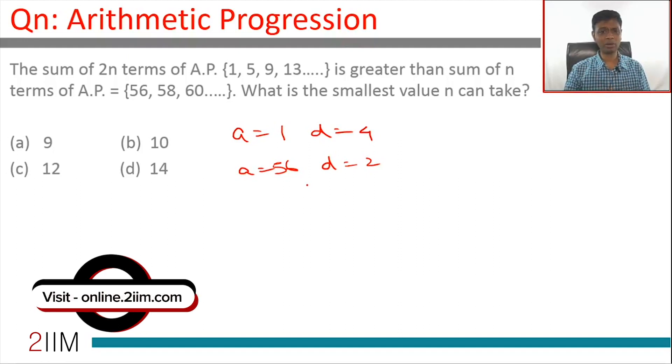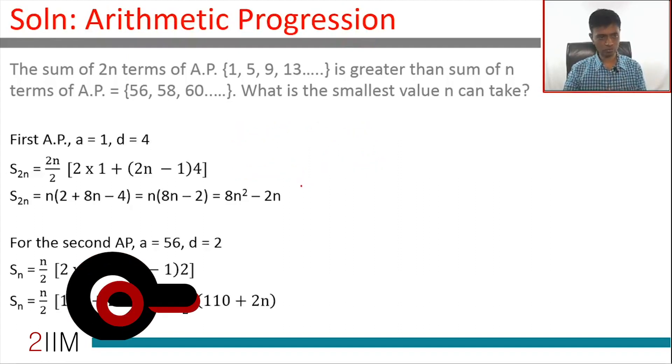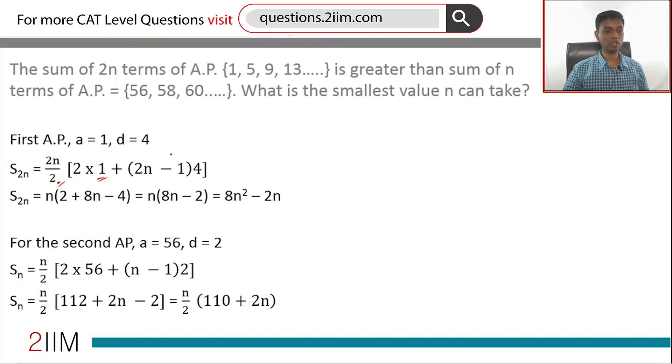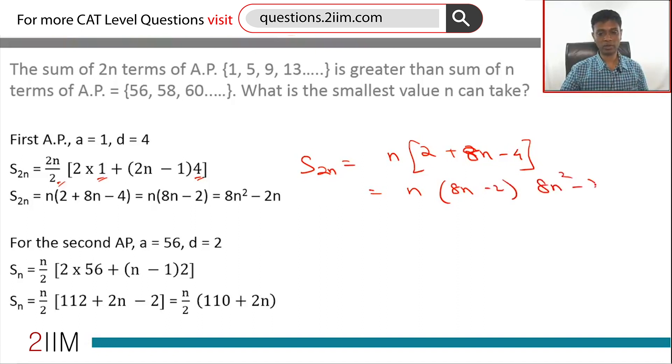I am just going to do this algebraically, plug in the formula, work from there. So, the sum up to 2n terms, sum up to n terms is n by 2 into 2a plus n minus 1 into d. In this case, it is 2n by 2 into 2 times 1, a is 1, 2n minus 1 into 4 or sum up to 2n terms of the first sequence is n times 2 plus 8n minus 4 or this is n times 8n minus 2 or 8n square minus 2n.